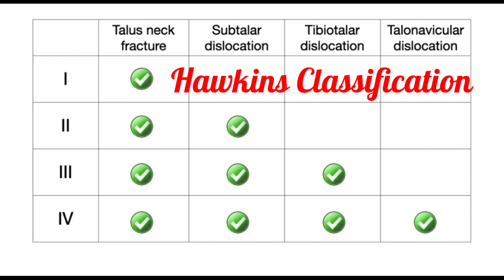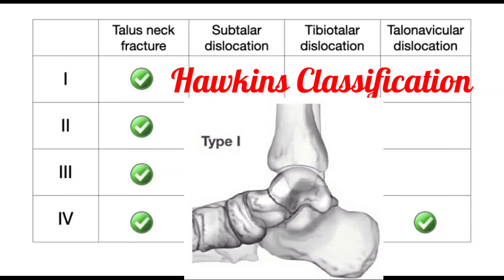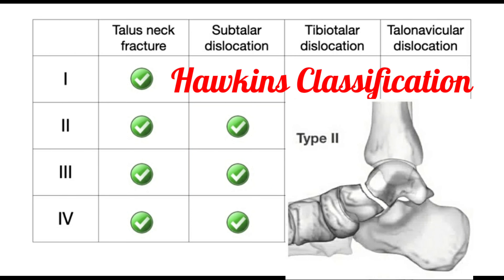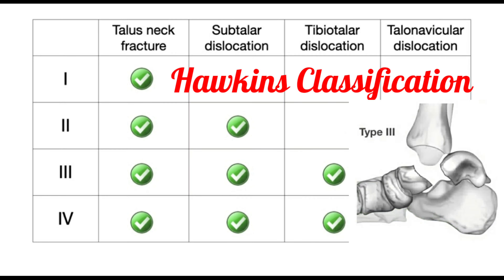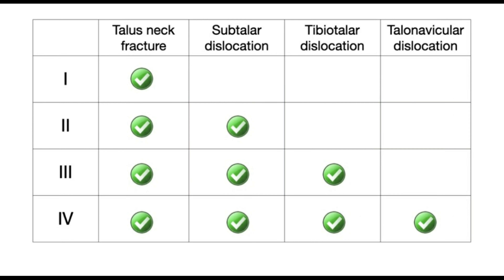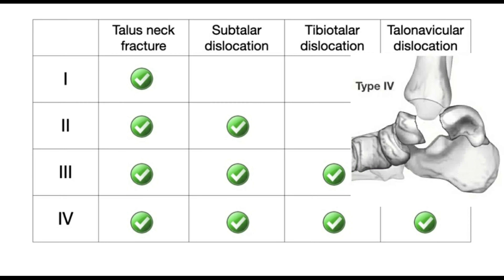Talus neck fractures can be classified by the Hawkins classification. In type 1 there is only a talus neck fracture. In type 2, in addition to the talus neck fracture, there is a subtalar dislocation. In type 3, in addition to the talus neck fracture and subtalar dislocation, there is also a tibiotalar dislocation.